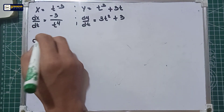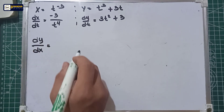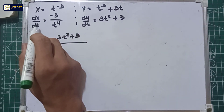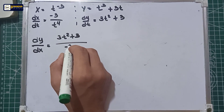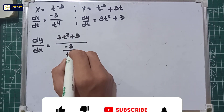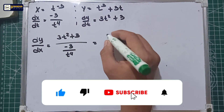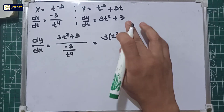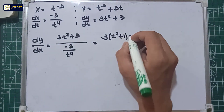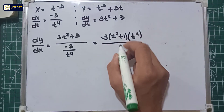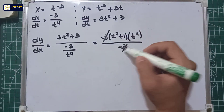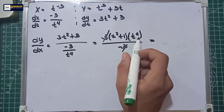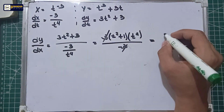The first derivative of a parametric form states that dy/dx equals dy/dt over dx/dt. The numerator is 3t squared plus 3, and the denominator is negative 3 over t to the fourth power. Overall, this equals 3 multiplied by the quantity (t squared plus 1) multiplied by t to the fourth power, all over negative 3. We can cancel out the 3, then distribute t to the fourth power into the quantity.